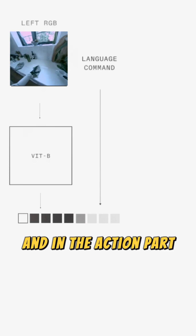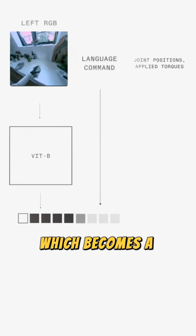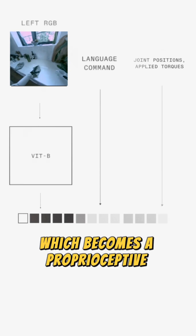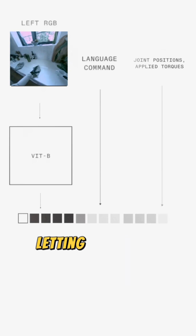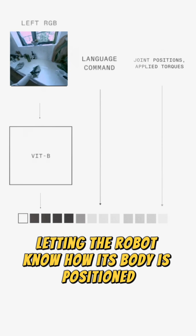In the action part, every joint's motor and force information becomes a proprioceptive embedding, letting the robot know how its body is positioned.